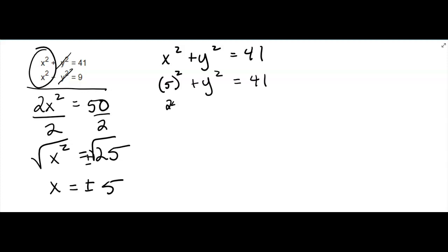5 squared is 25. If I subtract the 25, what do I get? y squared equals 16. So if I take the square root of both sides, I get plus or minus 4.